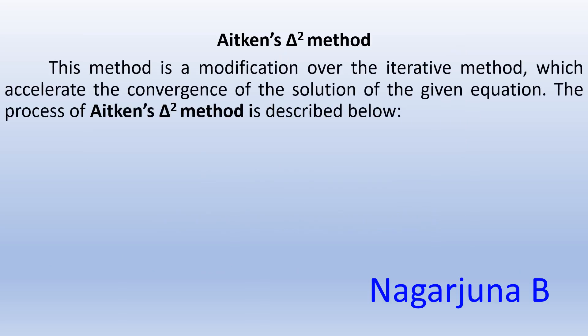Aitken's Delta Square Method is a modification over the iterative method, which accelerates the convergence of a solution of the given equation. This method will take us very nearly to the solution — we get approximately 99% exact solution by using Aitken's Delta Square Method. The process of the method is described as below.